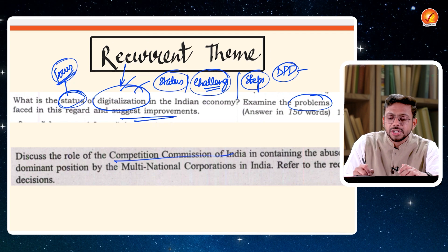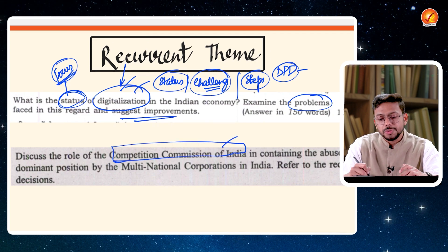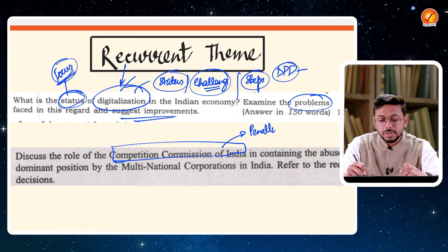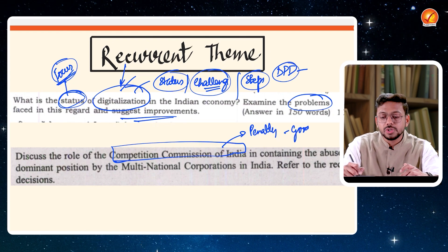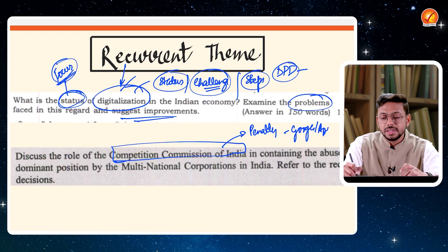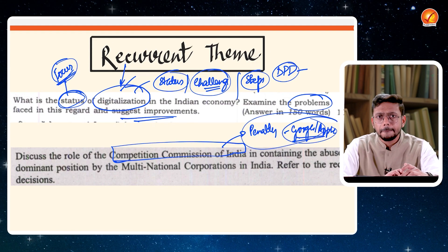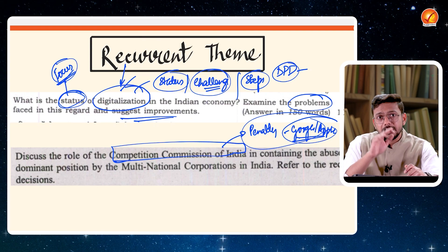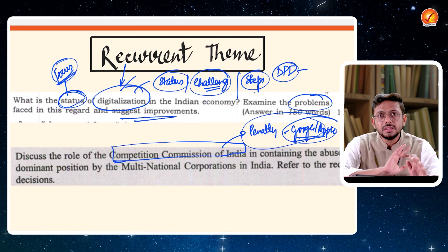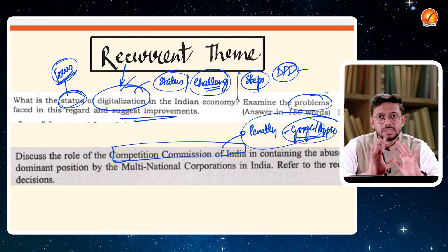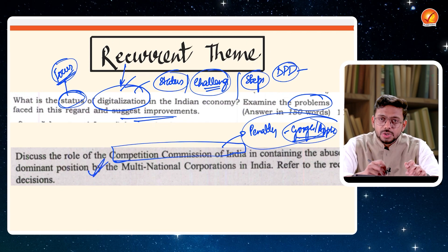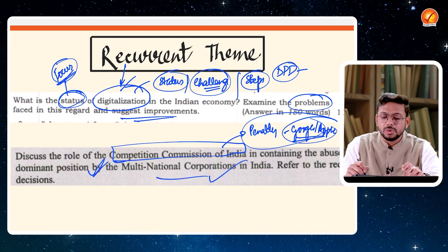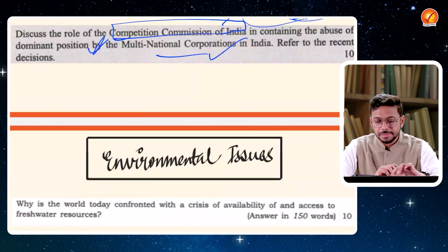Similarly, the Competition Commission of India was in news because of penalties being imposed on companies like Google, Amazon, and Apple. It has been in news for the past two to three years due to the rising importance and penetration of MNCs in the Indian system. This is a recurrent theme and therefore this particular question has been asked.